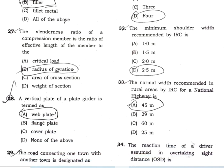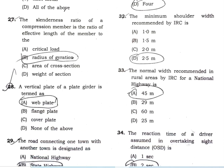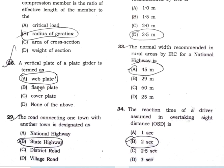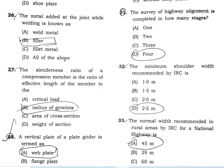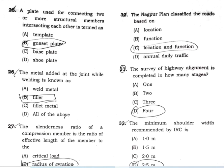The vertical plate of a plate girder is called the web. Roads are classified based on their locations and functions as per Nagpur road plan. The survey of highway alignment at the reconnaissance stage is known as a reconnaissance survey.